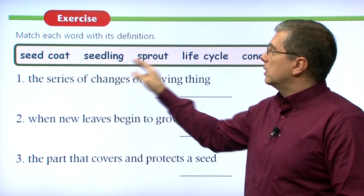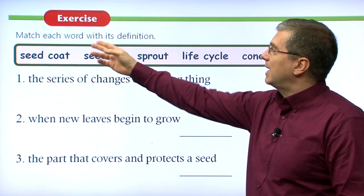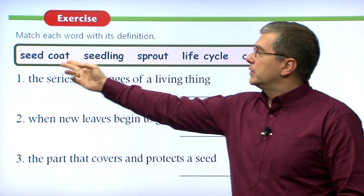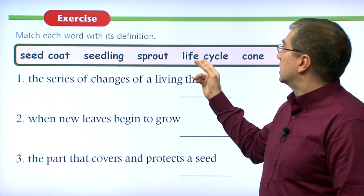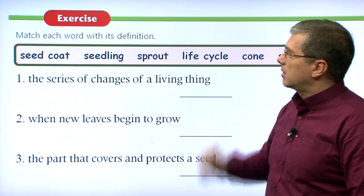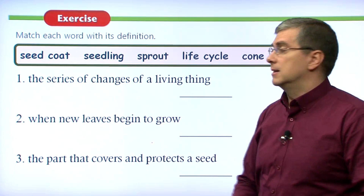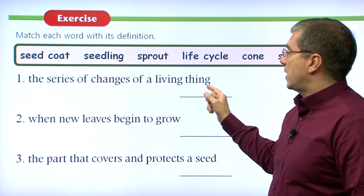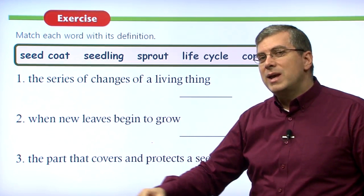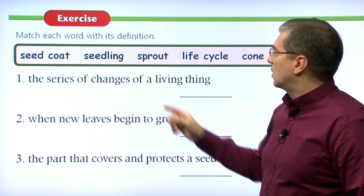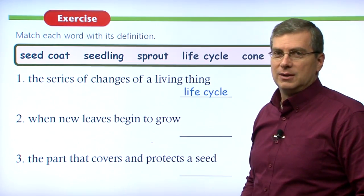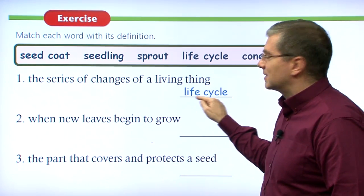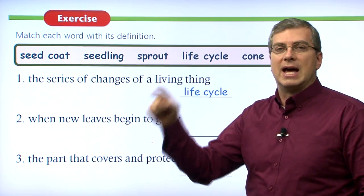Let's do a little exercise and review the words we've talked about so far. Match each word with its definition. The words are: seed coat, seedling, sprout, life cycle, cone, and seed. Number one — the series of changes of a living thing. I compared it to the wheel on your bicycle. It goes around and around — that is the life cycle.